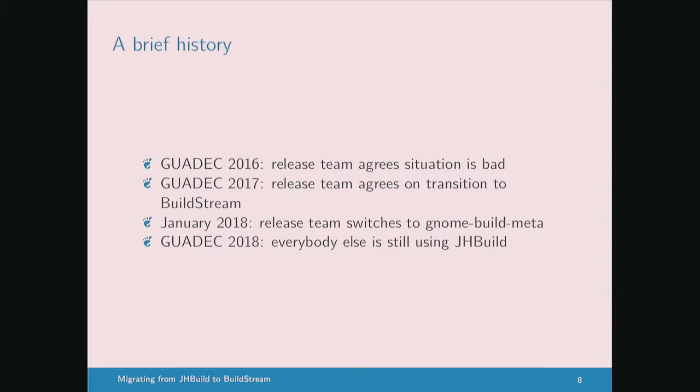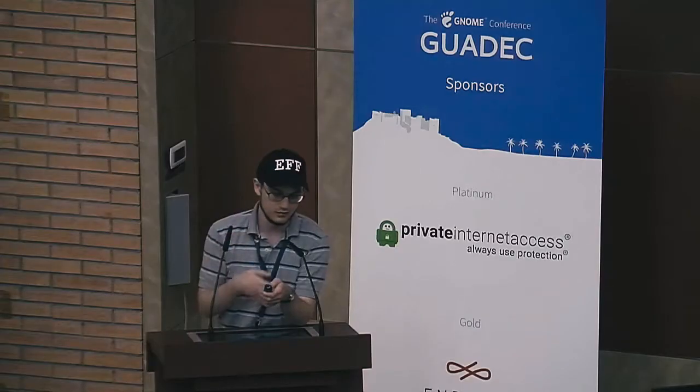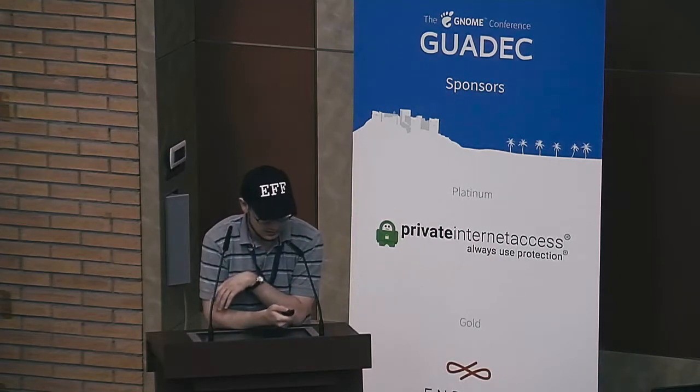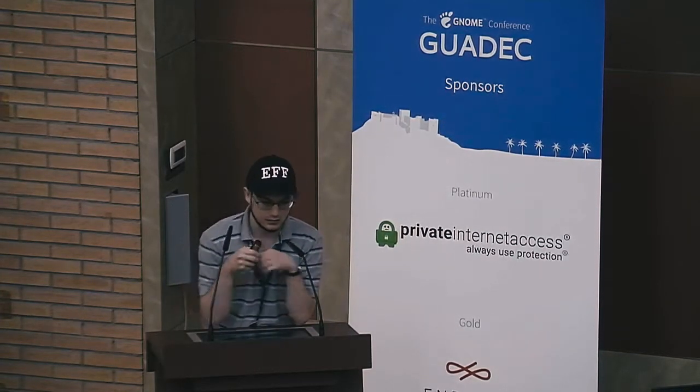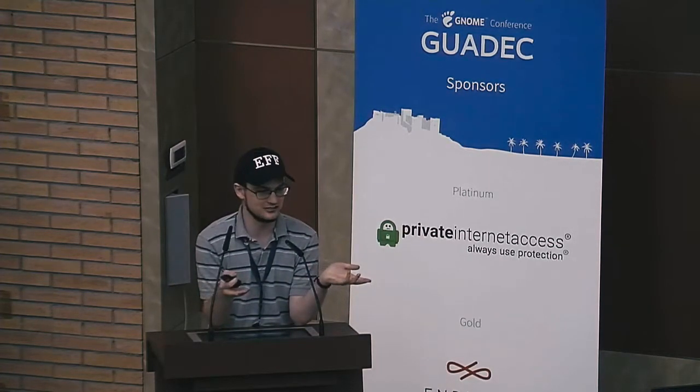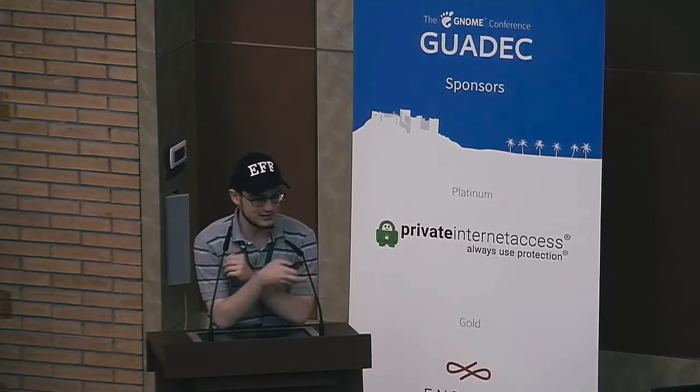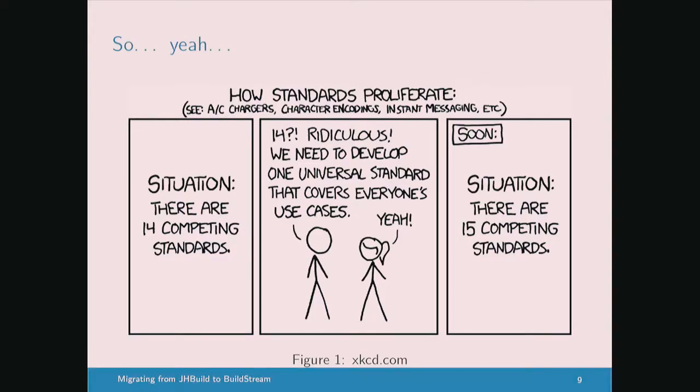What we released on release day is now a BuildStream project instead of a JHBuild module set containing references to tarball versions. For release team it's been really wonderful. But everyone else is still using JHBuild. In January when we made this announcement, our intent had been to deprecate JHBuild and get the developer community to move on to BuildStream — that has not happened. So now we effectively have four sets of build definitions to maintain.